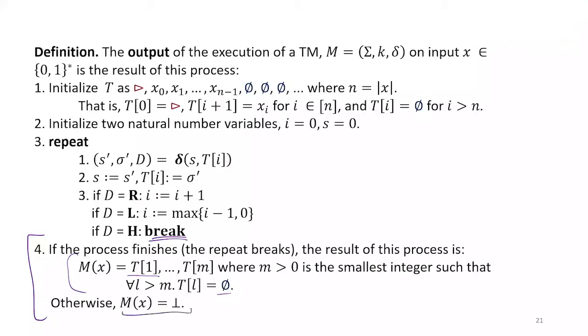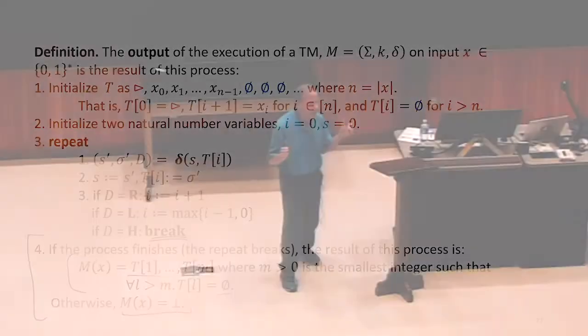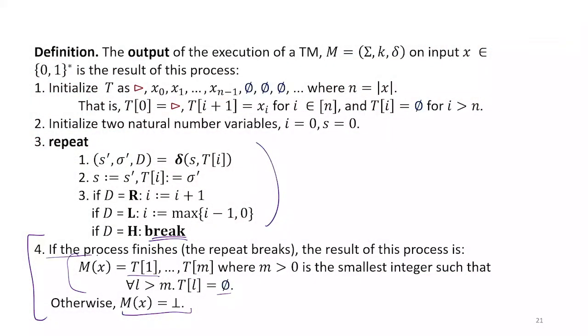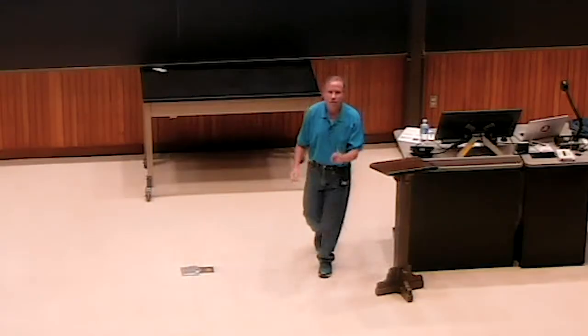Otherwise, the output is undefined. We use that bottom symbol to mean undefined. It could be undefined because we never finish this loop. We only have an output if we get to step four.